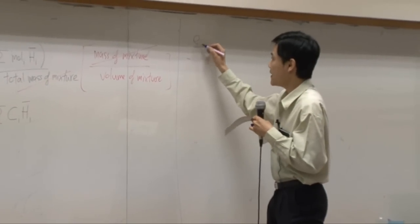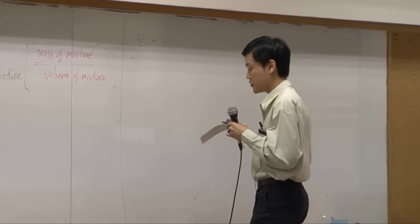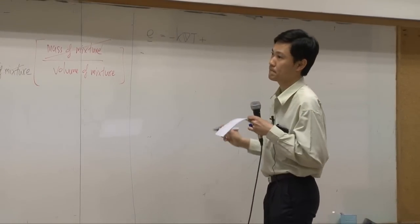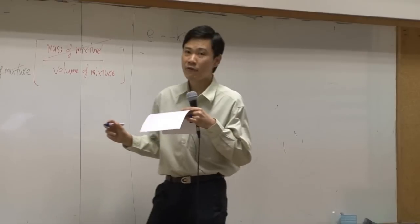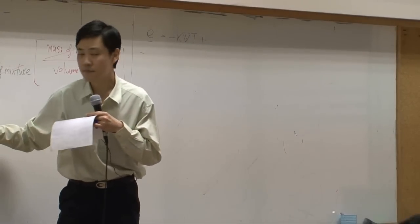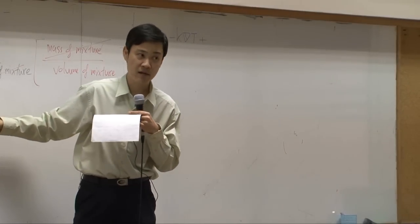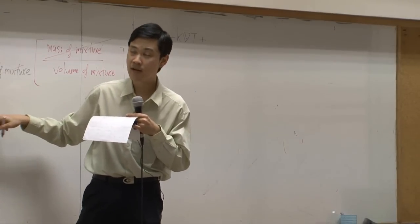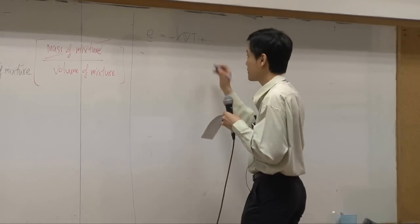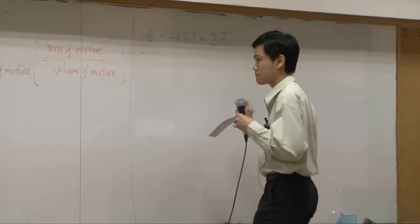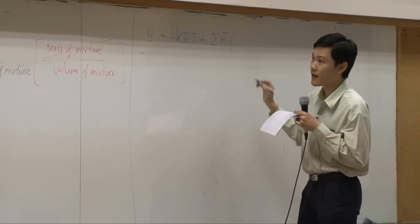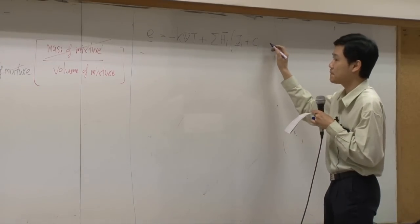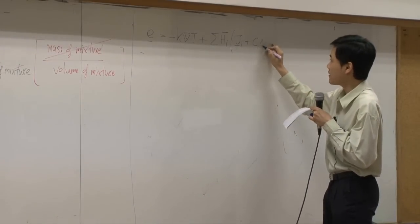Therefore, E is supposed to be equal to minus k del T plus... Now we have two terms. Both of them are in a summation sign. Both of them are supposed to have h-bar. So I'm going to take h-bar out — summation of h-bar. So inside you have Ji plus Ci times V.